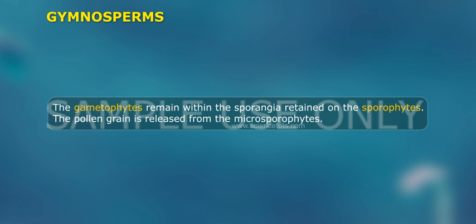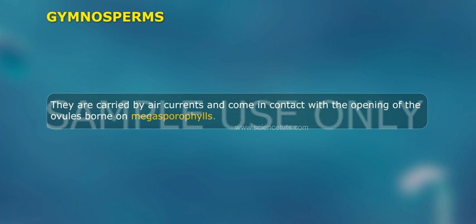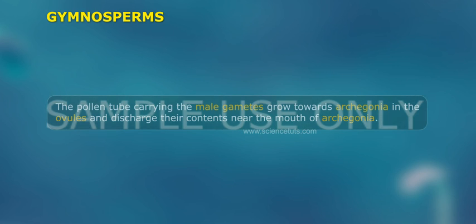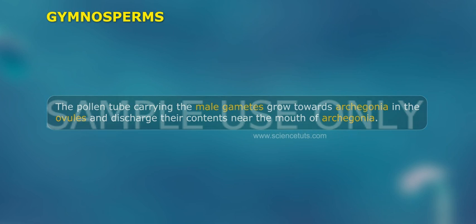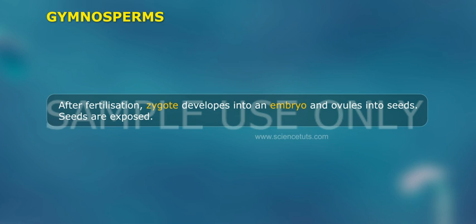The pollen grains are released from the microsporophylls. They are carried by air currents and come in contact with the opening of the ovules borne on the megasporophylls. The pollen tube carrying the male gametes grows towards the archegonia in the ovules and discharges its contents near the mouth of the archegonia. After fertilization, the zygote develops into an embryo and the ovules develop into seeds.